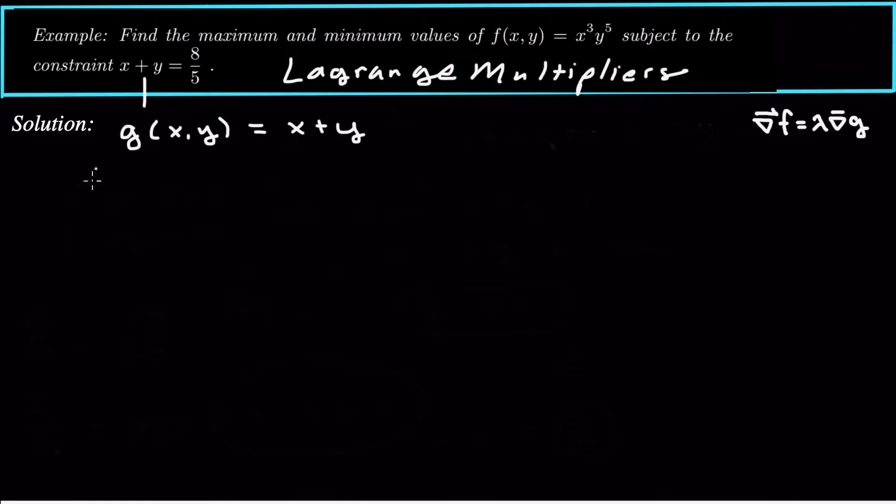So let's take the gradient of f. The gradient of f is, I'll put it in a column here, derivative with respect to x is 3x squared y to the 5th, and then partial derivative with respect to y is 5x cubed y to the 4th. And then we set that equal to lambda times the gradient of g, which in this case is just 1, 1.